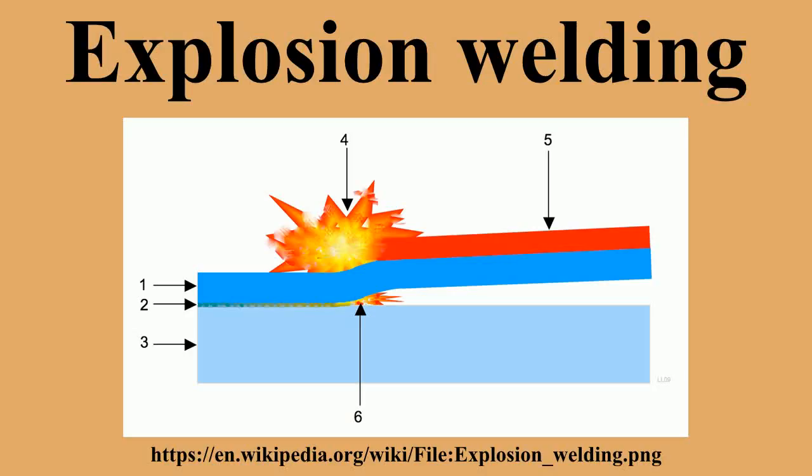This process is most commonly utilized to clad carbon steel plate with a thin layer of corrosion resistant material. Due to the nature of this process, producible geometries are very limited. They must be simple. Typical geometries produced include plates, tubing, and tube sheets.